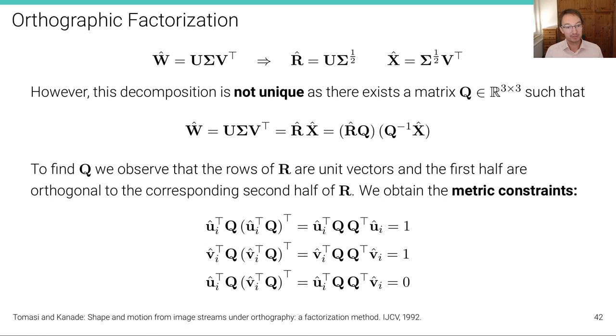So, to find this Q, that is the right Q that we actually want, we observe that the rows of R are actually unit vectors. And the first half are orthogonal to the corresponding second half of R. Remember, R are the basis vectors that span the coordinate systems of this orthographic projection, and they are orthogonal to each other, which means that if I multiply U with V, I get zero. And they are also unit vectors, so if I multiply U with U, I get one, and if I multiply V with V, I get one.